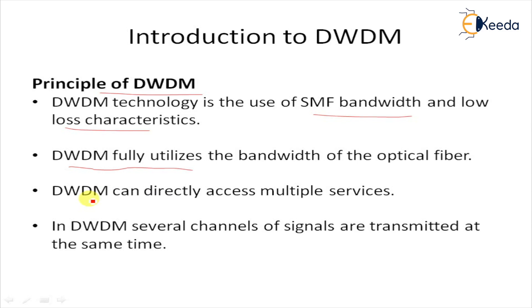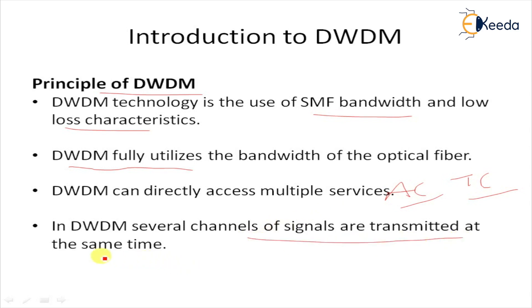In analog carrier communication systems, in order to fully utilize cable bandwidth resources and improve transmission capacity, the method of Frequency Division Multiplexing (FDM) is generally used. In such systems, several channels of signals are transmitted at the same time over the same cable, and the receiver filters out each channel's signals using band-pass filters for different carrier frequencies.